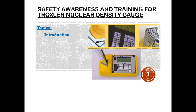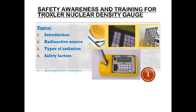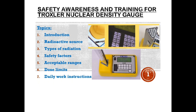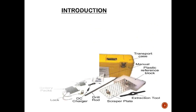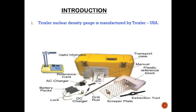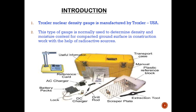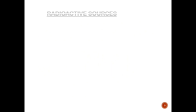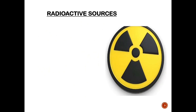The topics we'll cover today include: introduction of the machine, radioactive sources, types of radiation, safety factors, acceptable ranges, dose limits, daily work instructions, and transportation procedure for carrying the nuclear density gauge. The Troxler is manufactured by Troxler, USA. This type of gauge is normally used to determine density and moisture content.